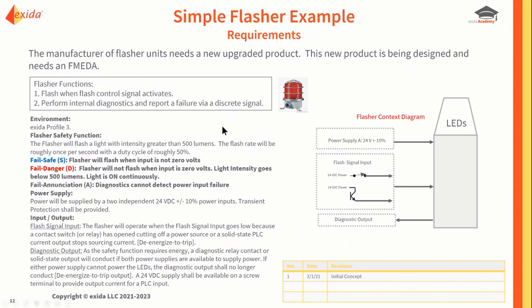We need to understand exactly how it works, so we look at a flasher context diagram. The primary functions are: number one, flash when the control signal says to flash and don't flash when it doesn't. Perform internal diagnostics and report a failure via a discrete signal. So this does have some automatic diagnostics built in.